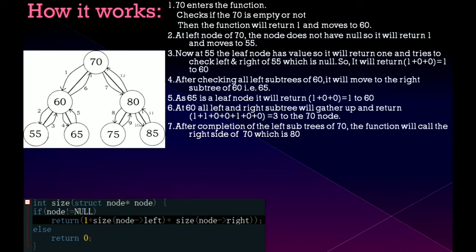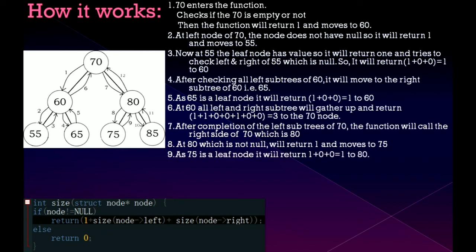After completion of the left subtree of 70, the function will call the right side of 70 which is 80. At 80 which is not null will return 1 and move to 75. As 75 is a leaf node which is similar to 55 and 65 which will return 1 to 80.